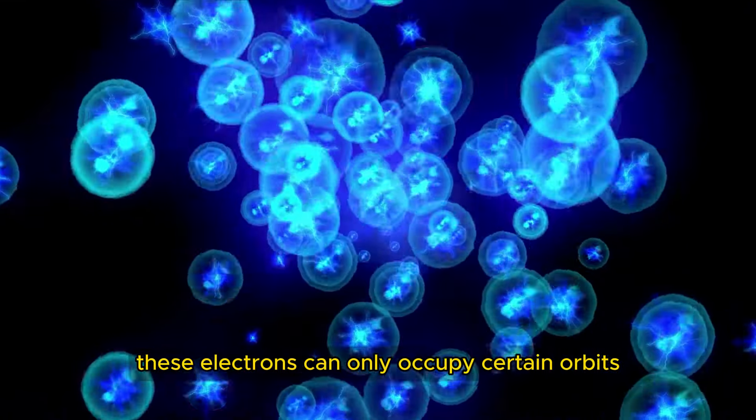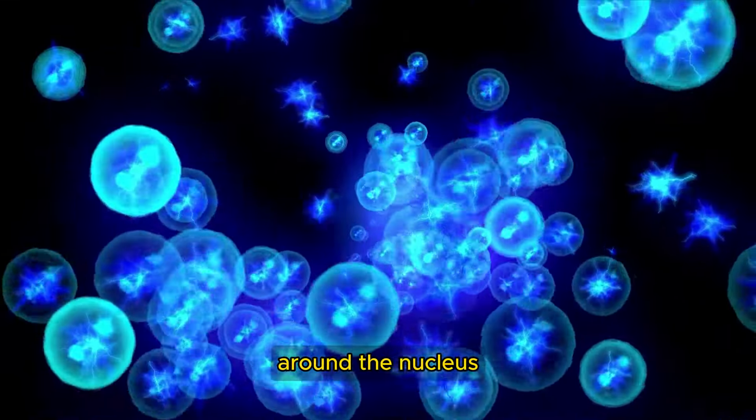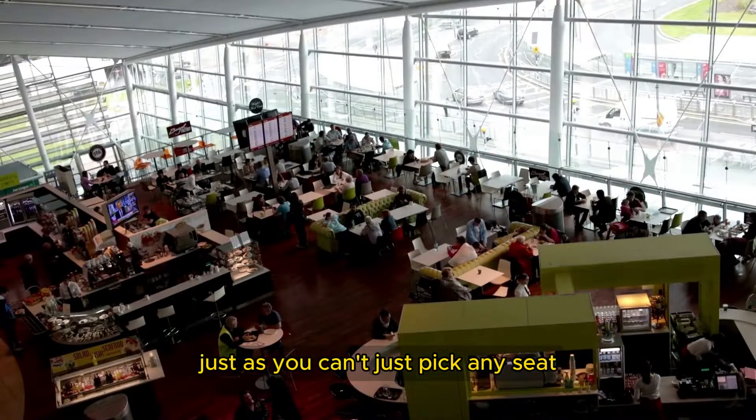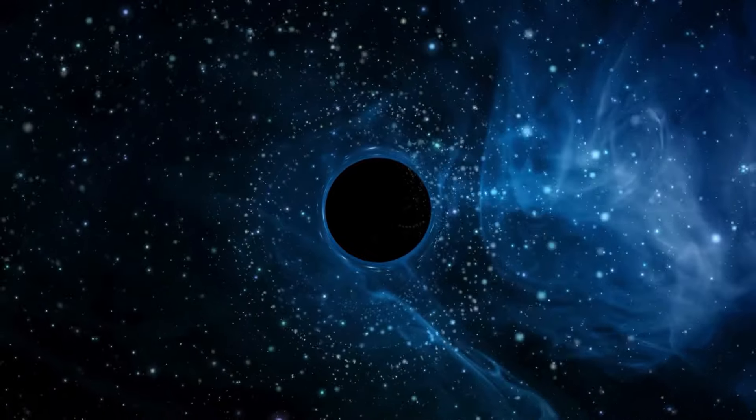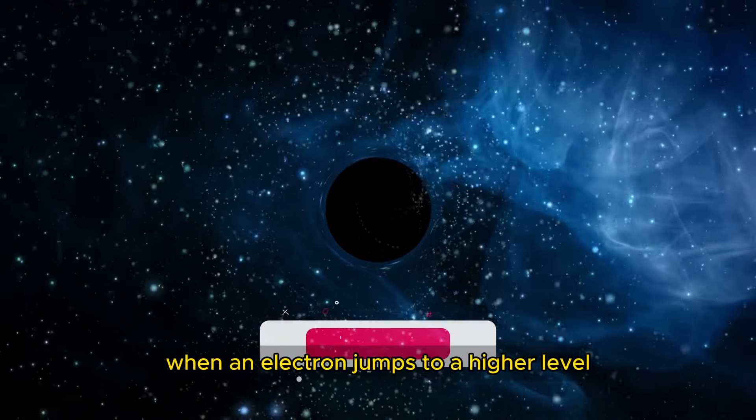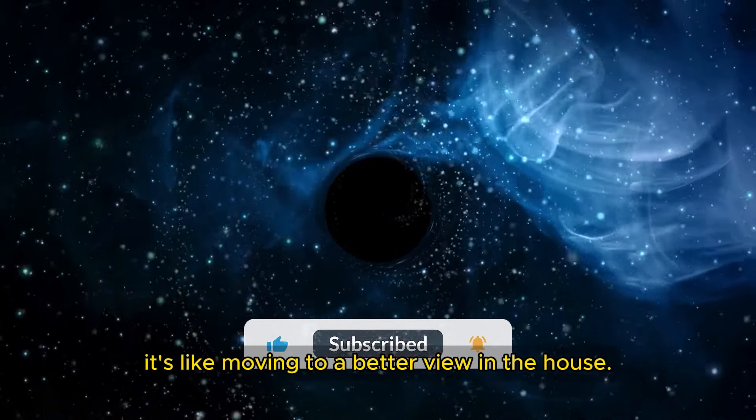These electrons can only occupy certain orbits around the nucleus, just as you can't just pick any seat in a crowded restaurant. Each seat, or energy level, has its own defined size. When an electron jumps to a higher level, it's like moving to a better view in the house.